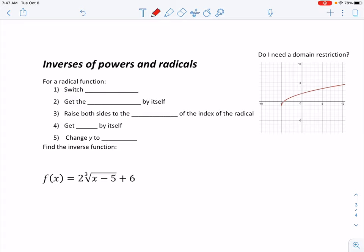So when we find the inverse of a radical, first thing we're going to do is, of course, switch our x and our y. We're going to get the root or radical by itself, whatever root it is. We'll raise both sides to the power of the index of the radical. So on this example down below, the index is a 3. We're going to raise it to the power of 3. We're going to get y by itself, and then we'll change y to f inverse of x. All right, so let's do an example down here.